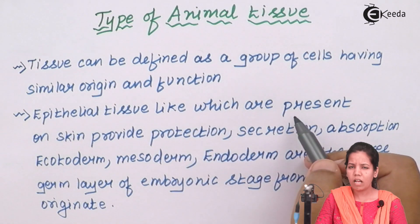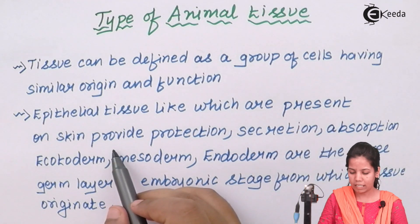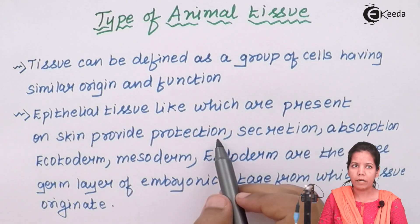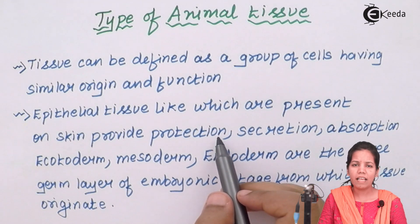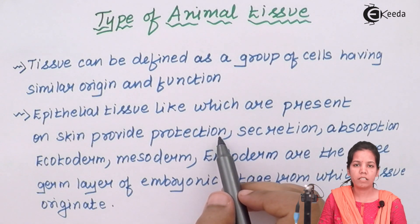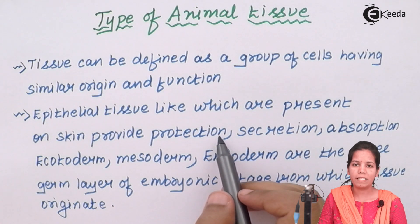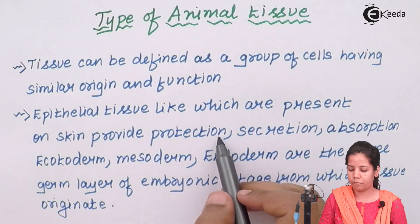Epithelial tissues, which are basically present on the upper surface of your skin, provide protection. For example, epithelial tissue on the upper surface of your skin acts as a barrier — it stops the entry of dust, pollutants, water, moisture, and raindrops from passing beneath your skin. It is impermeable to all this stuff.